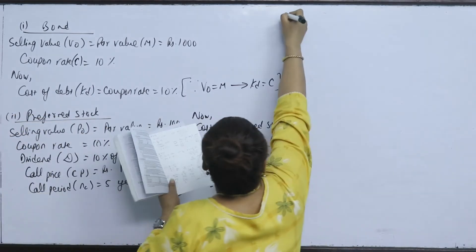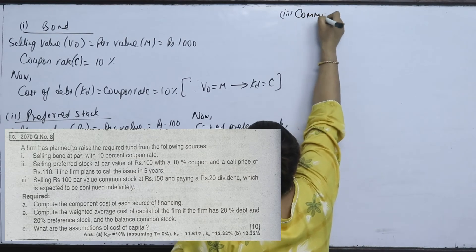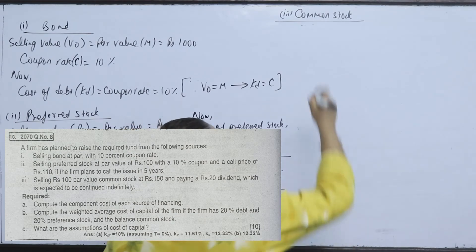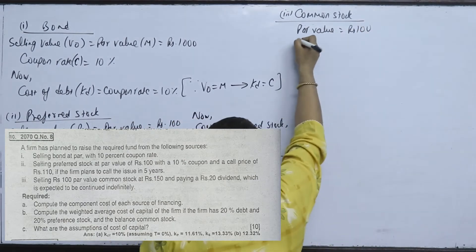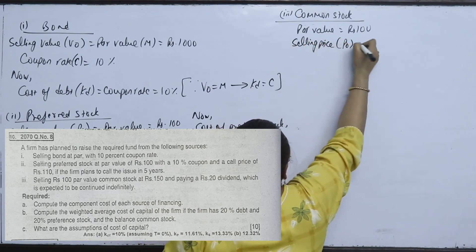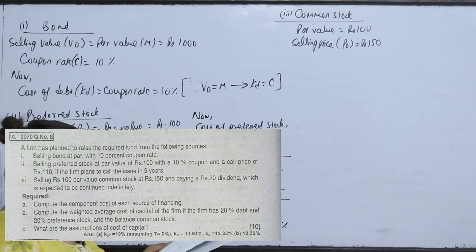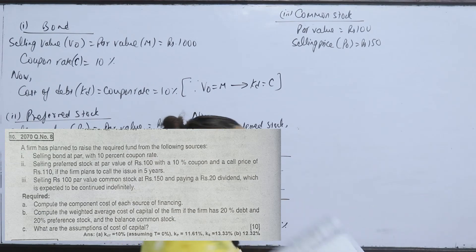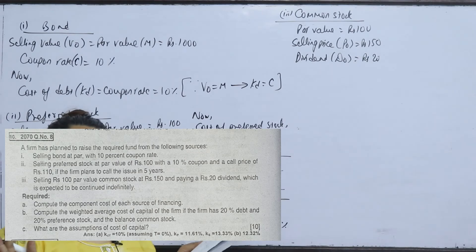The third source is common stock with a par value of 100 rupees, and a selling price (P0) of 150. The dividend (D0) is 20 rupees, and the growth rate is 0.